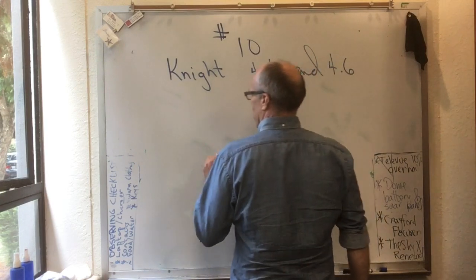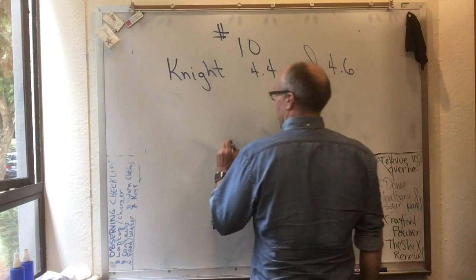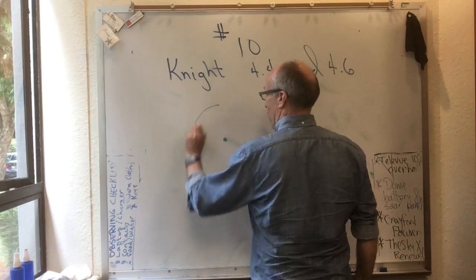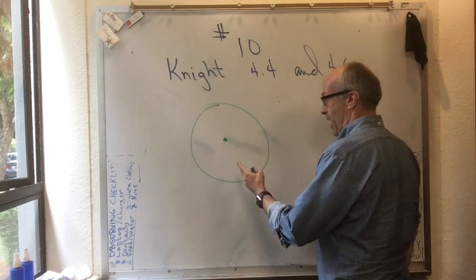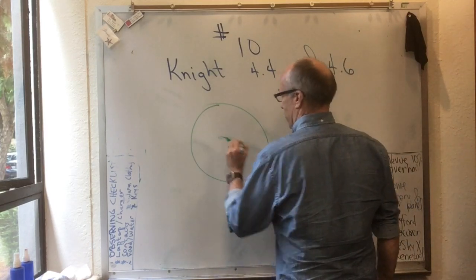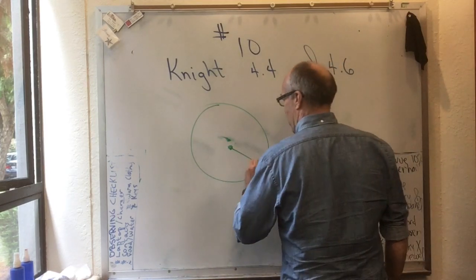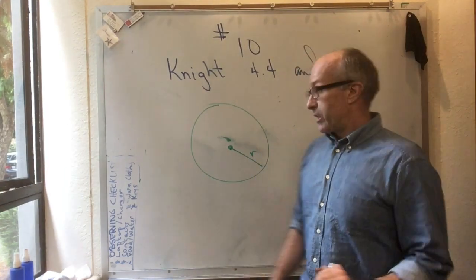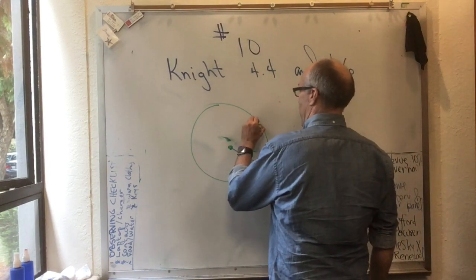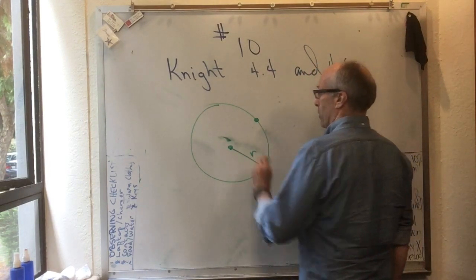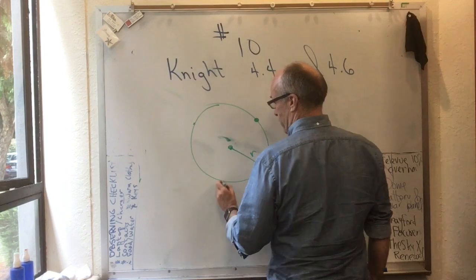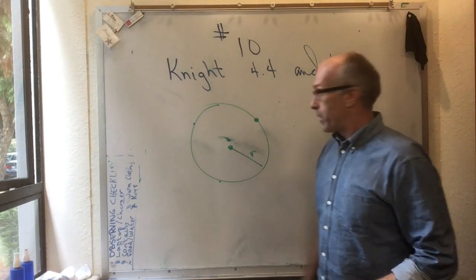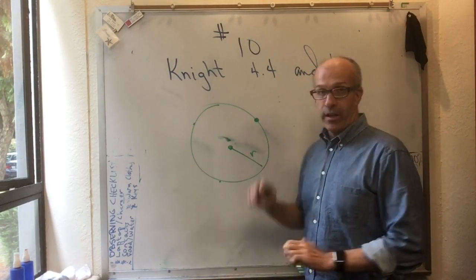So the idea here in Knight 4.4 is that you have some track that's round, and the track has radius r. And whatever particle you're considering in the problem is stuck to the track. So it might be here on the track, or it might be over here on the track, or it might be over there on the track, but it's on this track that has radius r.